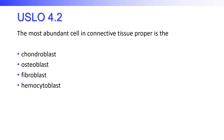The most abundant cell in connective tissue proper is the chondroblast, osteoblast, fibroblast, or hemocytoblast? Chondroblast refers to cartilage, osteoblast refers to bone, so the correct answer is the fibroblast. Fibroblasts are the cells that make all those protein strands found in connective tissue.